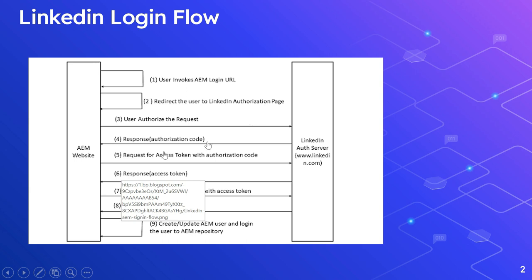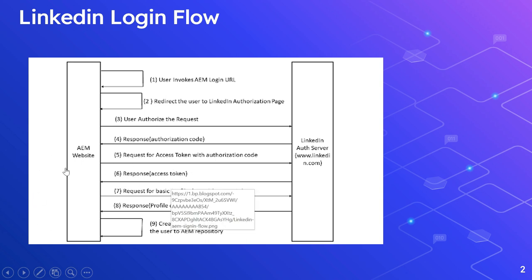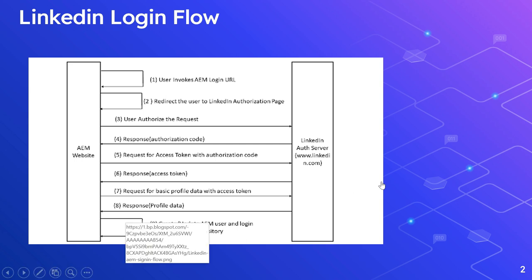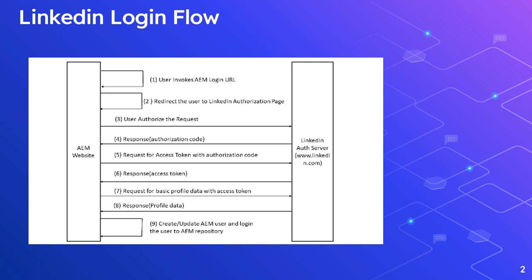Once AEM has the authorization code, AEM can request an access token using that authorization code. LinkedIn will then respond with the access token. Once AEM has the access token, AEM can request basic profile data using that access token. LinkedIn sends a response with the profile data — it will have fields like first name and last name. Once AEM has the data, AEM can create a new user or update an existing user and let the user log into the AEM repository.